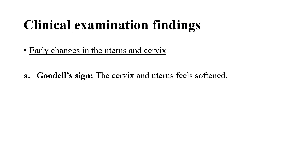Moving towards clinical examination findings, we look at the uterus and cervix. There are different probable signs of pregnancy. The first is Goodell's sign, which involves examining the cervix and uterus.